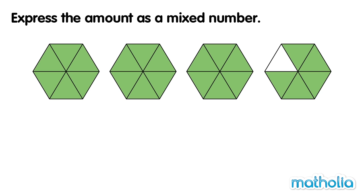How many shapes are coloured? Three and five sixths. Three and five sixths of the shapes are coloured.